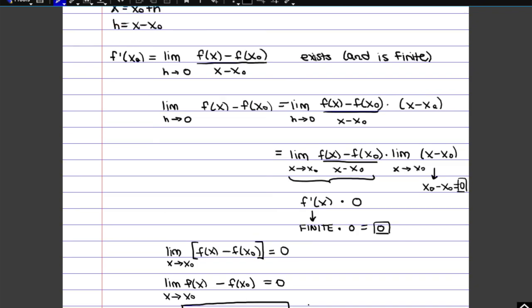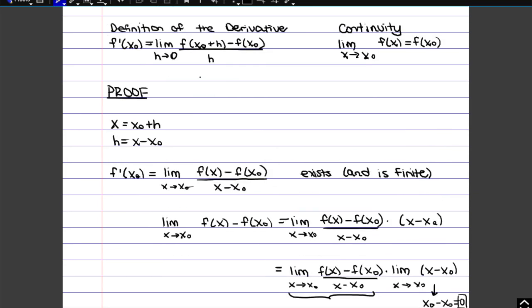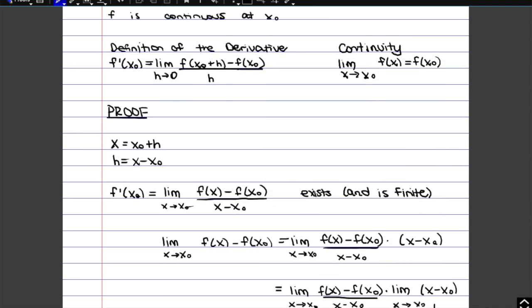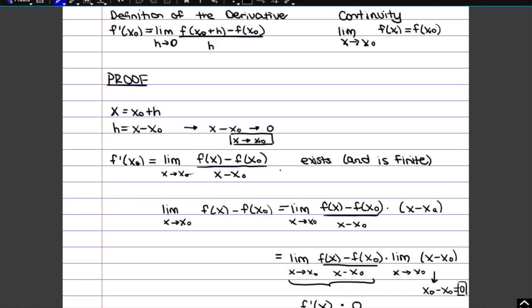So just to clarify, I meant to write x tending to x0. I was using h goes to zero by accident because that's what we usually use for the difference quotient. Usually h represents the difference between the x's, but in this case, the difference was x minus x0, which is tending to zero. And that's the same thing as saying that x tends to x0. The point is that the two points are becoming the same.